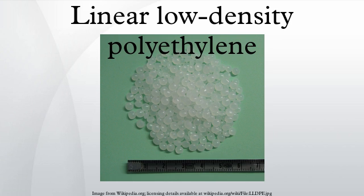Production and properties: The production of LLDPE is initiated by transition metal catalysts, particularly Ziegler or Phillips type catalysts. The actual polymerization process can be done either in solution phase or in gas phase reactors. Usually, octane is the co-monomer in solution phase, while butene and hexane are copolymerized with ethylene in a gas phase reactor.